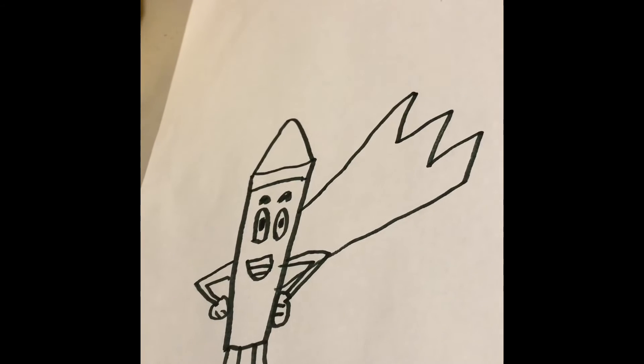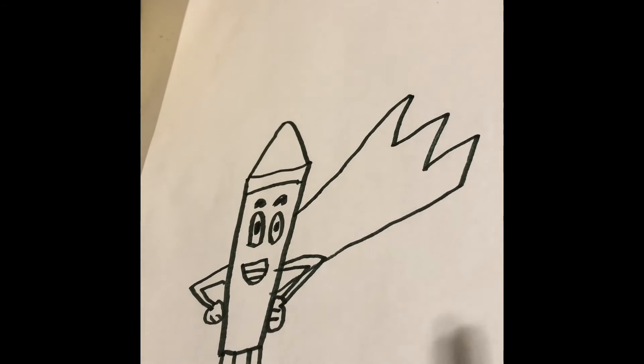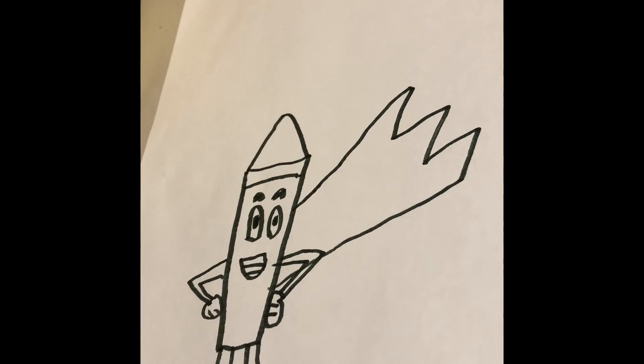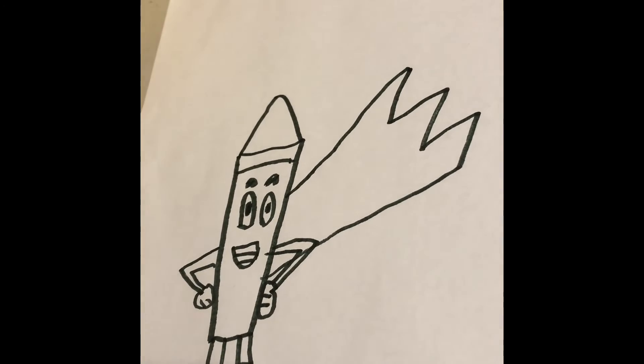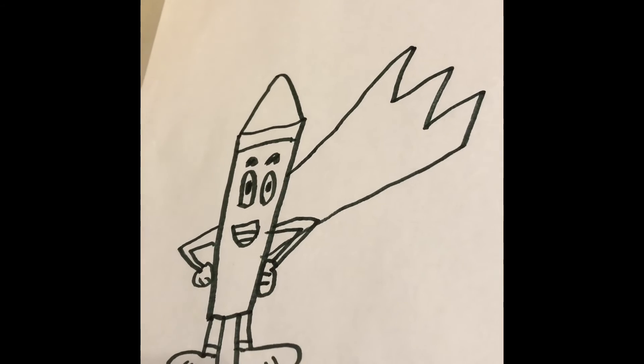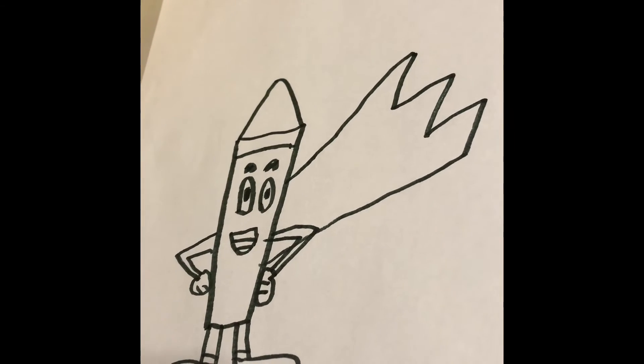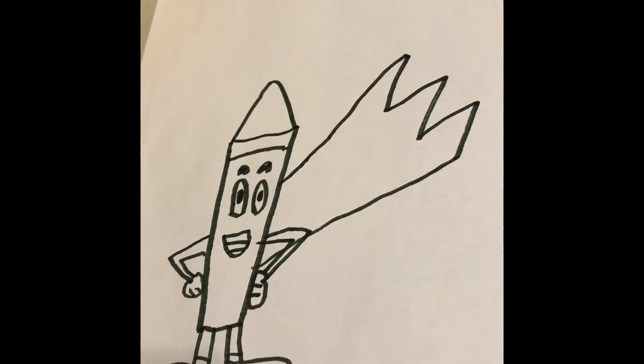Okay, now we're finished drawing our super crayon. And now let's color it. My crayon is going to be orange, and the cape's going to be red, but you can choose whatever color you want.